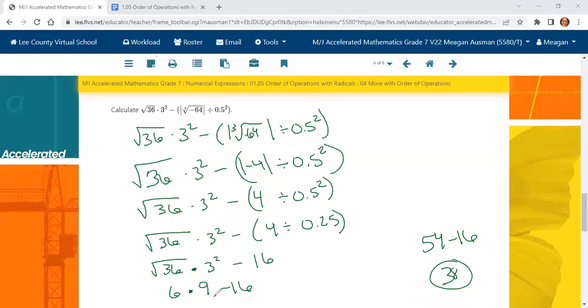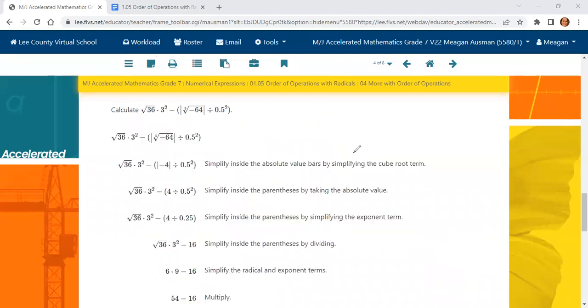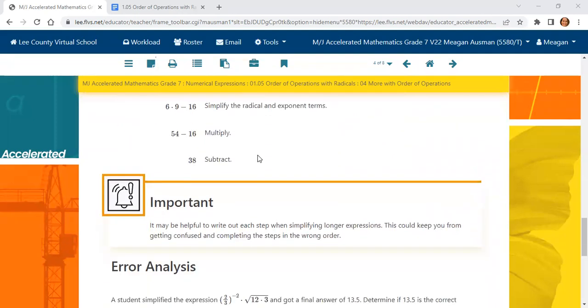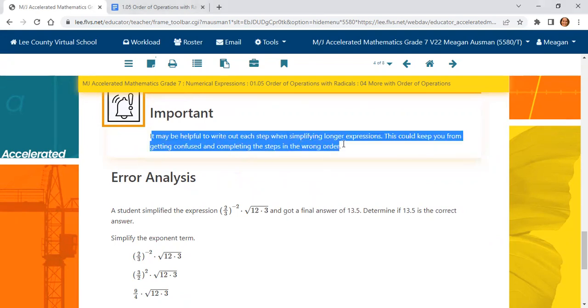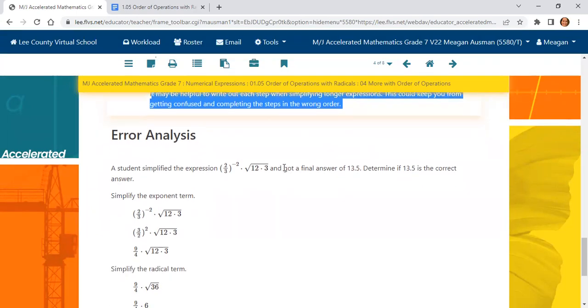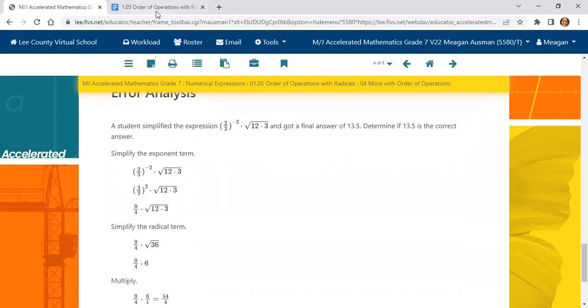Notice how much I wrote on the screen. It's important to write it all down. Even if you don't think you need to, if you don't get the answer that matches something on the assignment, and you have to go back and see what you did wrong, if you don't have anything written down, it's hard to see where you went wrong. So please, please, please get used to writing it down. And here's an important note from FLVS. It may be helpful to write out each step when simplifying longer expressions. It helps you not get confused, and it helps you complete the steps in the right order.